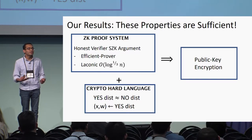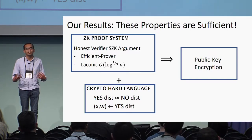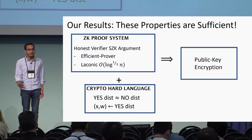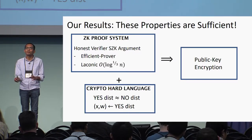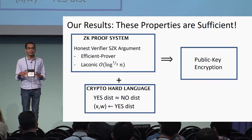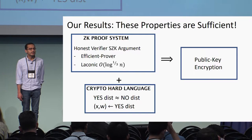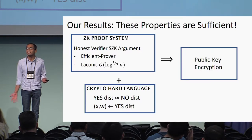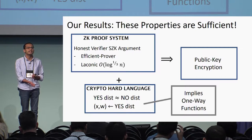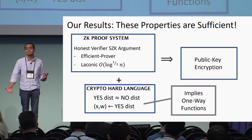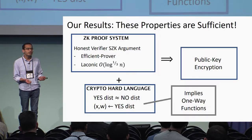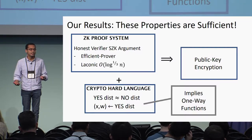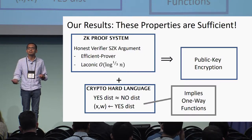Specifically, if you have a statistical zero-knowledge proof system which is an honest-verifier proof or argument, where the prover is efficient and the prover talks little, along with a hard language where you can sample — a yes distribution and a no distribution that sample instances in and out of the language, with corresponding witnesses for yes instances — then you can construct public key encryption from this. Note that honest-verifier is a weakening of zero knowledge, making the result stronger. Also, argument is weaker than proof. This notion of cryptographic hardness does imply one-way functions.